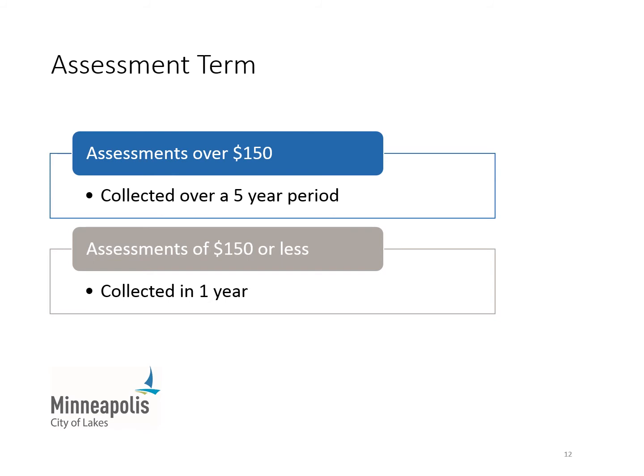Assessments over $150 will be collected in five annual installments. Assessments of $150 or less will be collected in one installment. To pay the assessment on these terms, you do not need to take any action in advance. They will be collected through Hennepin County property taxes after they are levied, typically beginning the year after construction.